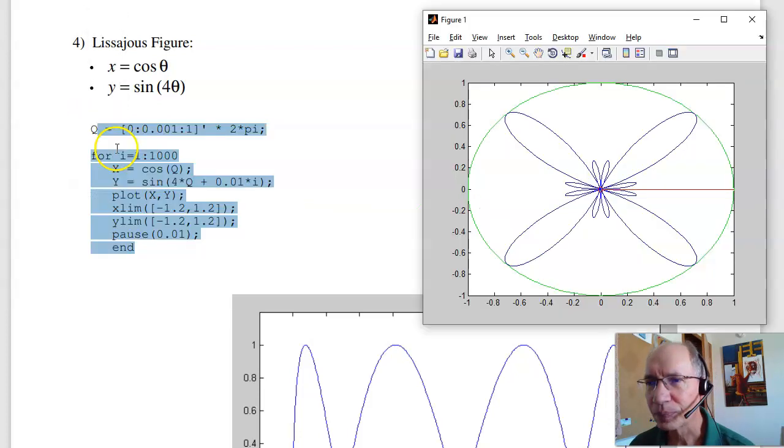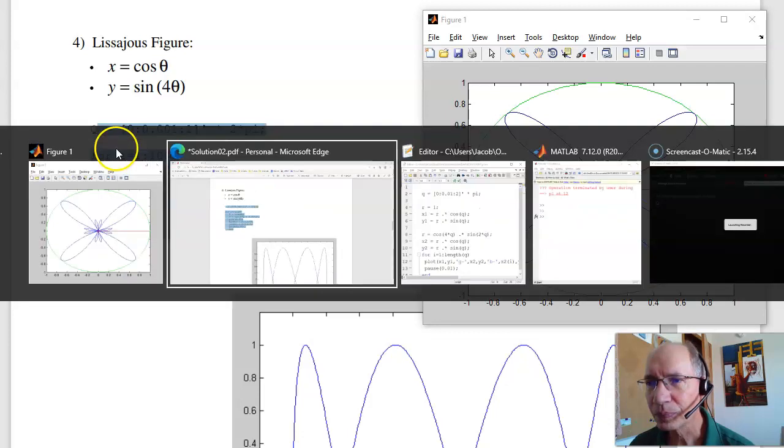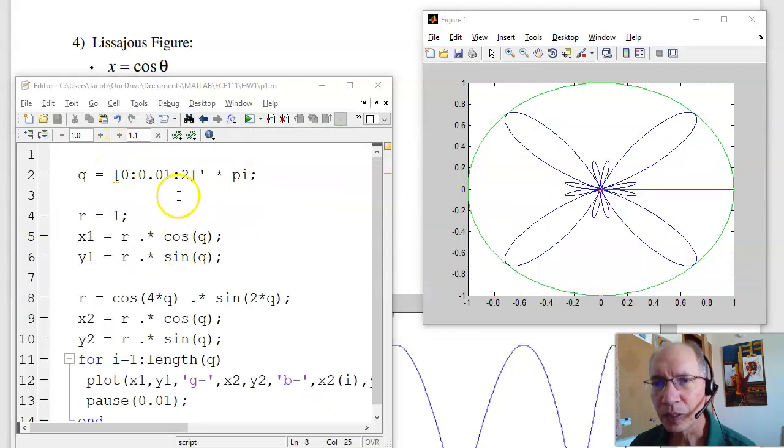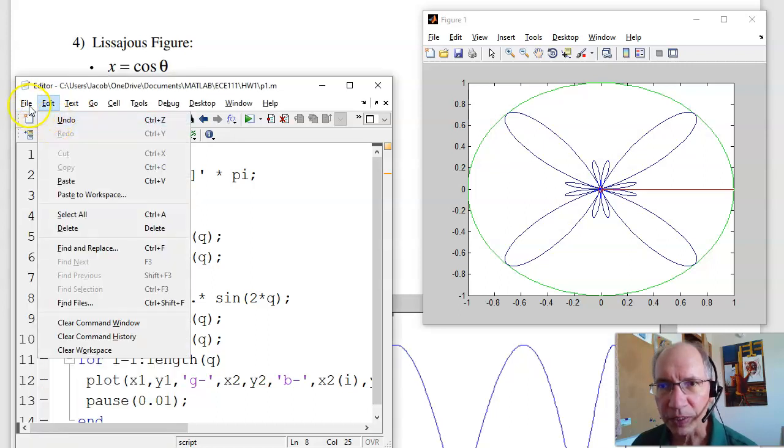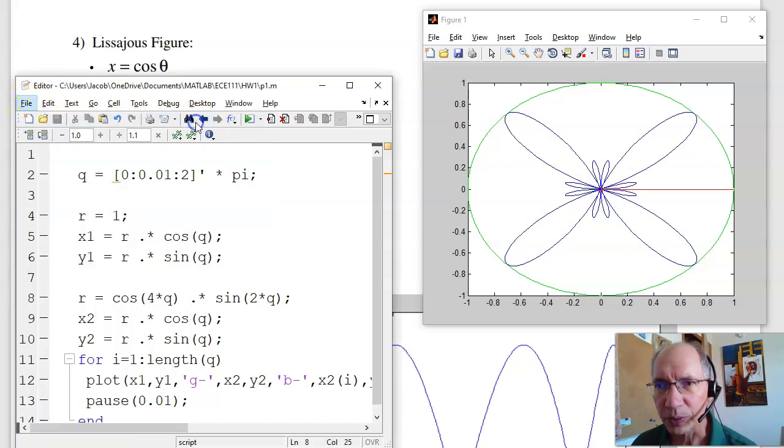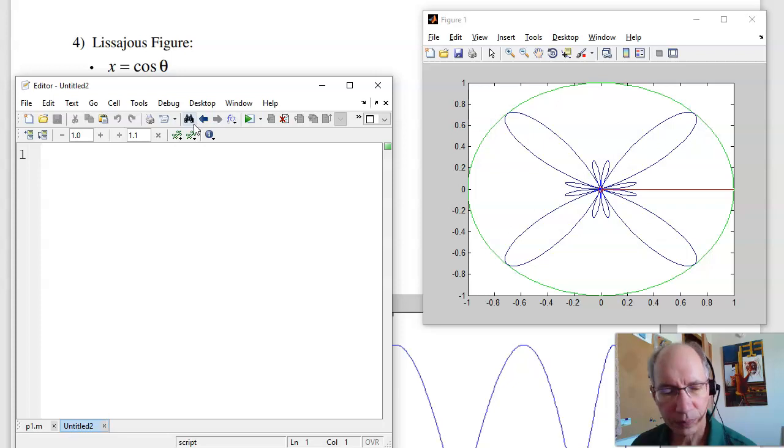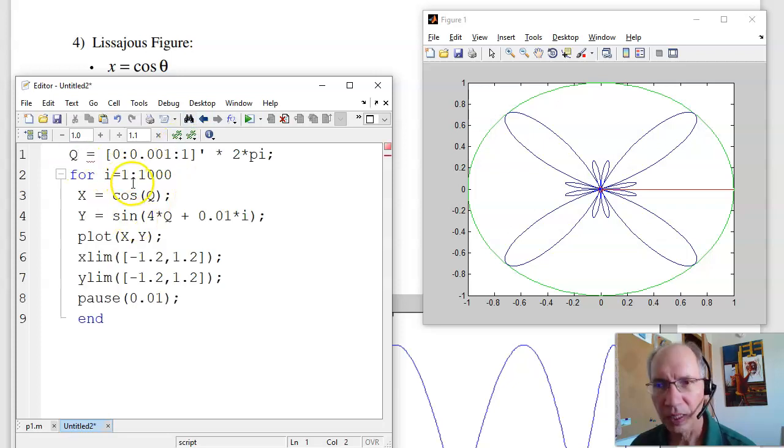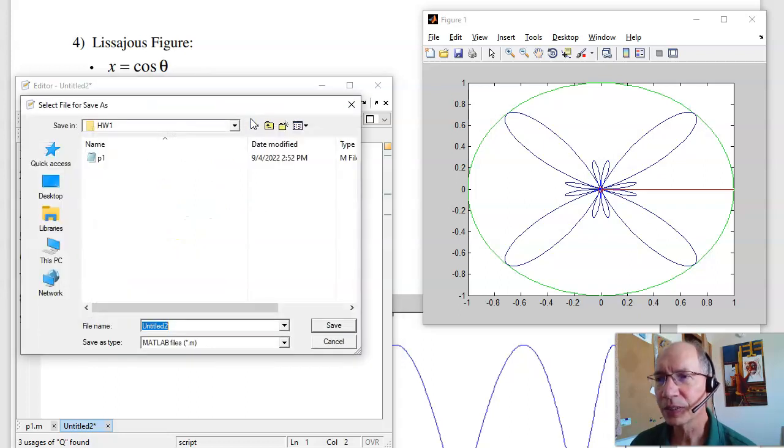Do file new script. I can paste that in there. What this one does, this plots cosine theta versus sine four theta plus a small angle. That angle is going to change. This is like having two frequencies that are slightly out of sync. If I run this, I get what's called a Lissajous figure. This is problem four.